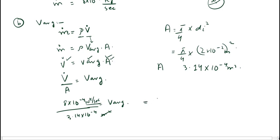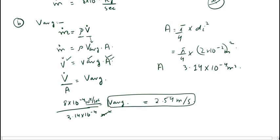So V-average = 8 × 10⁻⁴ divided by 3.14 × 10⁻⁴, giving us 2.54 meters per second. This is the answer for part B, the average velocity at the nozzle exit.